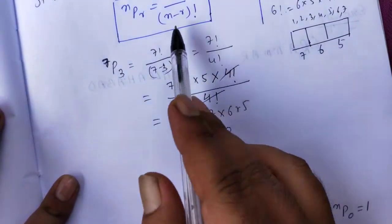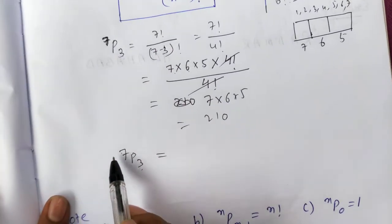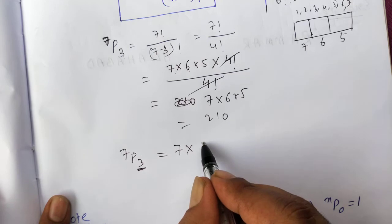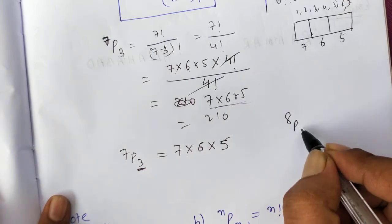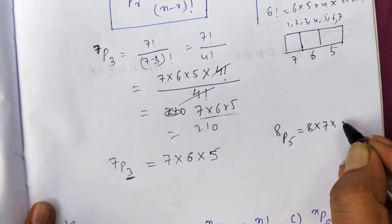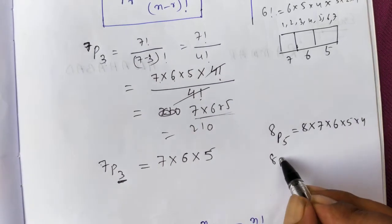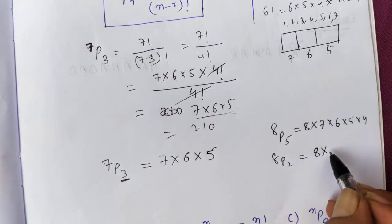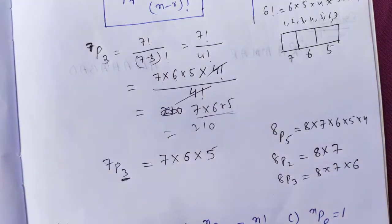We can also solve directly: for 7P3, start from 7 and count backward 3 times — 7 × 6 × 5. For 8P5, go 5 times: 8 × 7 × 6 × 5 × 4. For 8P2, go 2 times: 8 × 7. For 8P3: 8 × 7 × 6. The second number tells you how many terms to take.